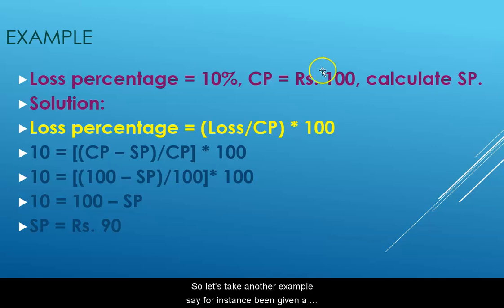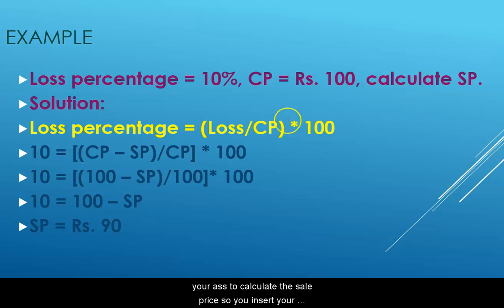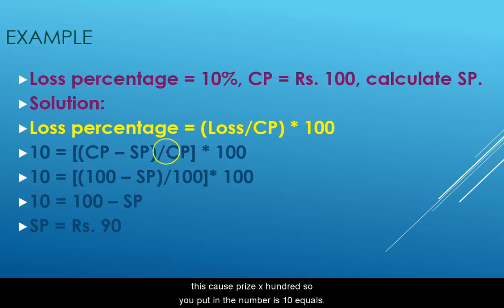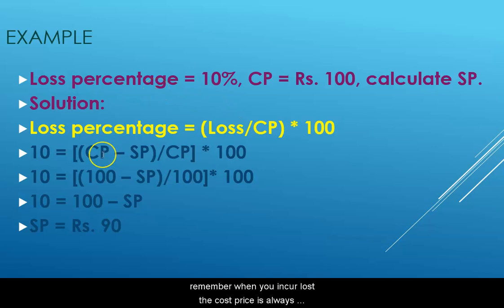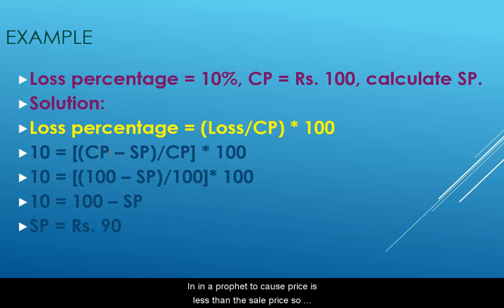Let's take another example. Say we're given a loss percentage of ten percent and a cost price of one hundred rupees, and we're asked to calculate the sale price. Insert the formula: loss percentage equals loss divided by cost price times one hundred. Replace loss with cost price minus sales price, because when you incur a loss the cost price is always more than the sale price.